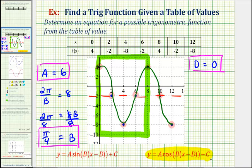And then finally, c affects the vertical shift up or down. And since our midline is at y equals negative 2, the graph has been shifted down 2 units. Therefore, c is equal to negative 2.